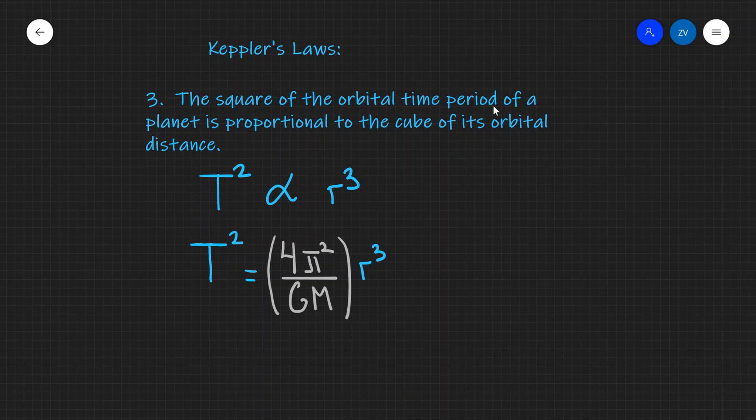Now the orbital time period is simply the time a planet takes to complete one orbit around another object, and the square of that time is proportional to the orbital distance. In practice this means that the farther away a planet is from the sun, the longer it will take to actually orbit the sun.